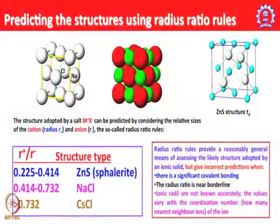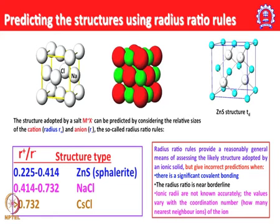Prediction may also be uncertain near borderline values — for example, if the radius ratio falls around 0.414–0.420, it could have either the zinc sulfide or sodium chloride structure. Similarly, borderlines exist between NaCl and CsCl structures. Ionic radii are not always known accurately and vary with coordination number, since ionic radii essentially depend on the nature of the neighboring ions.